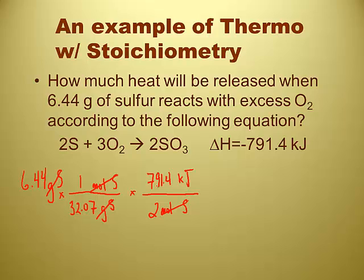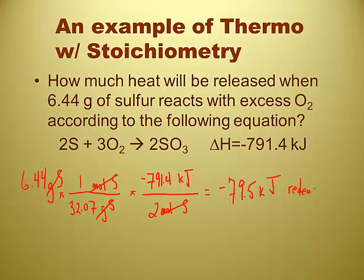So I'm going to put two moles of sulfur on the bottom and 791.4 kilojoules on top. Does it matter if I include that negative sign on the 791.4? No, because it's not going to change the direction — it's still going to be released. So you get 79.5 kilojoules of energy released when you react 6.44 grams of sulfur with excess oxygen. Whether you have the negative sign on the answer or not, it doesn't matter because this is energy being released. In the Moodle quizzes, we'll always put energy in as a positive value. As long as it's established already as being endothermic or exothermic, it's just a quantity difference — not a direction.